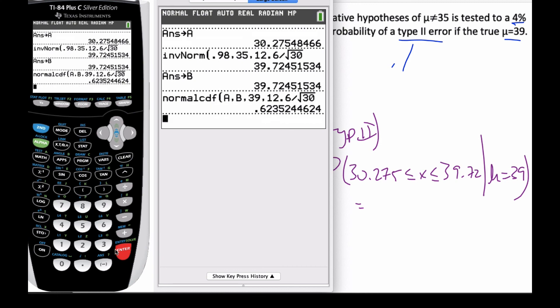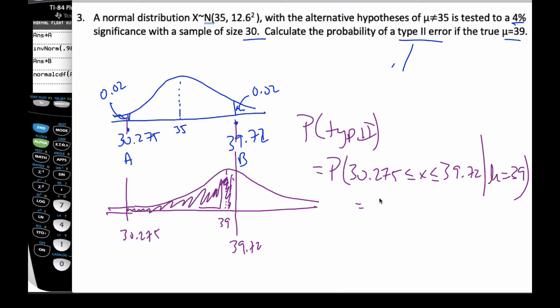And then I get an answer of 0.6234. So this is the probability of a Type II error. This is doing a two-tail test.